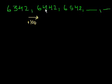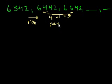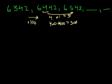And when we went from 6,442 to 6,542, what happened? Well, the same thing. We had the hundreds digit, 4, and we incremented it by 1. When you increment the hundreds digit by 1, 4 plus 1 is equal to 5 — you're actually saying 400 plus 100 is equal to 500, because we're operating in the hundreds place. So we've added 100 again. It looks like the pattern is each number is 100 more than the one before it.